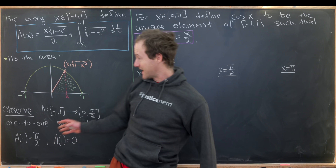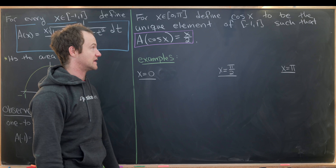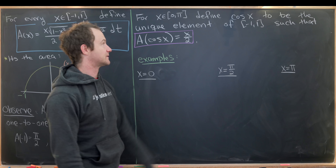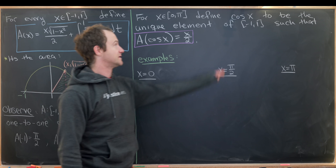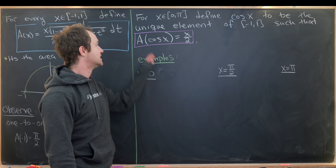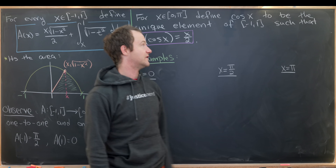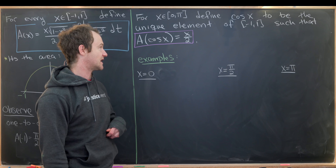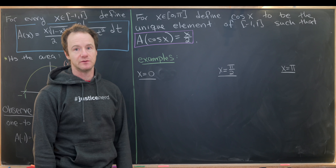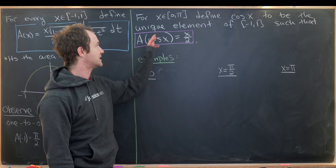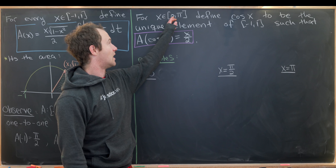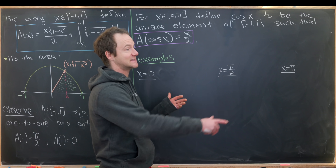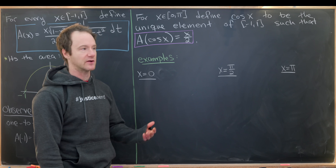Now we use this to define the cosine function. For every x on the interval zero to pi, we define cosine of x to be the unique element of negative one to one such that A evaluated at cosine of x equals x over two. This only defines cosine on zero to pi, but we can extend the definition to all real numbers using periodicity.